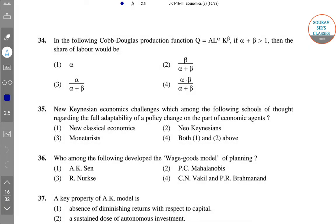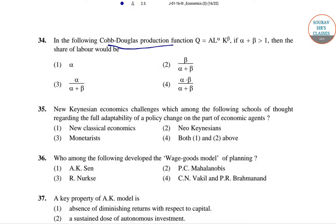Question 34: In the Cobb-Douglas production function Q equals this, with alpha plus beta greater than 1, the share of labor would be alpha. The right answer for question 34 is option 1.